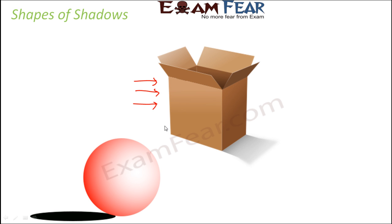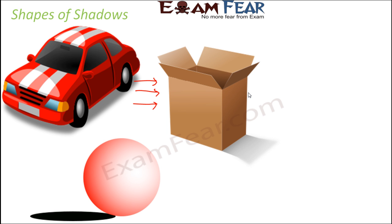Similarly, if light was falling from a different face of the box, the shadow would form on the other side. Basically, the shape of the shadow is determined by the direction in which light is falling on the object, the shape of the object, and the angle from which you are looking at the shadow. Look at this car — the shadow you see here is just a rectangle, even though the shape of the car is very different, because light is falling from the top of the car, making the base area blocked.